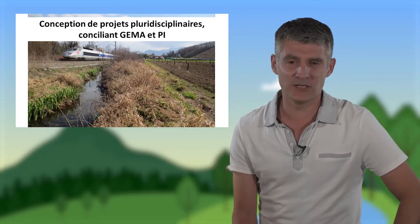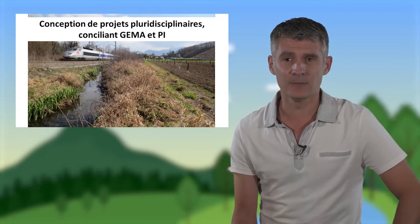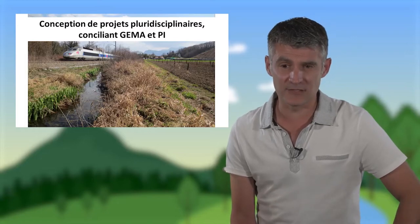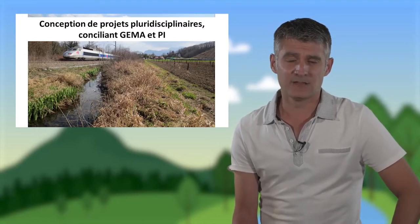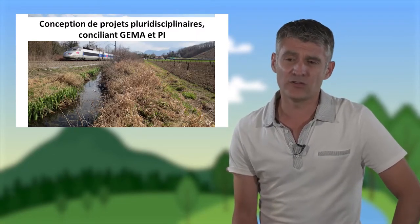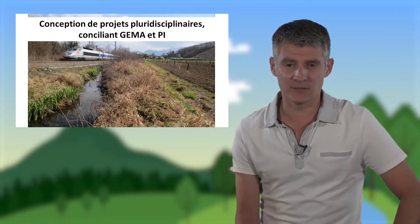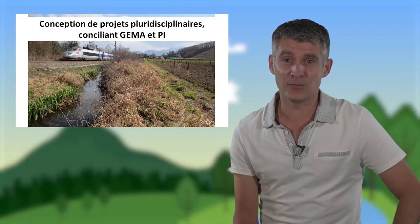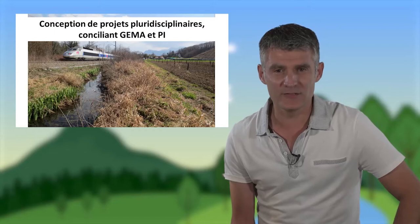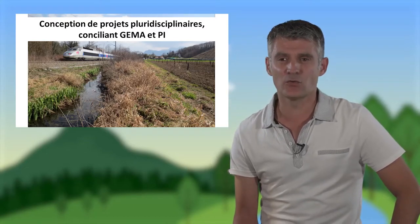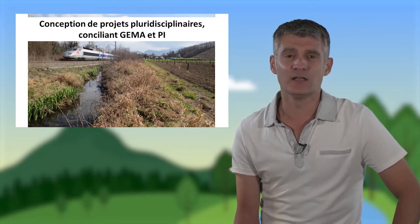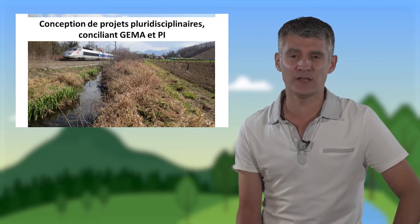On voit par exemple sur cette illustration un cours d'eau qui est linéaire, perché, dégradé, et qui déborde régulièrement sur une ligne à grande vitesse. Faire de la GEMA ici va consister à réaliser une restauration écologique du cours d'eau, à lui rendre un fonctionnement plus naturel, à le faire reméandrer, tout en protégeant la voie ferrée contre les inondations. Cela implique aussi de s'interroger sur les conséquences de ces actions sur le fonctionnement hydrologique et sédimentaire des milieux situés plus à l'aval.